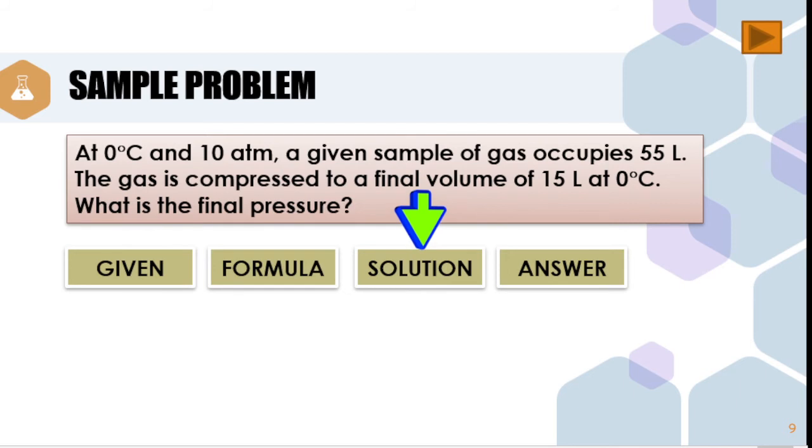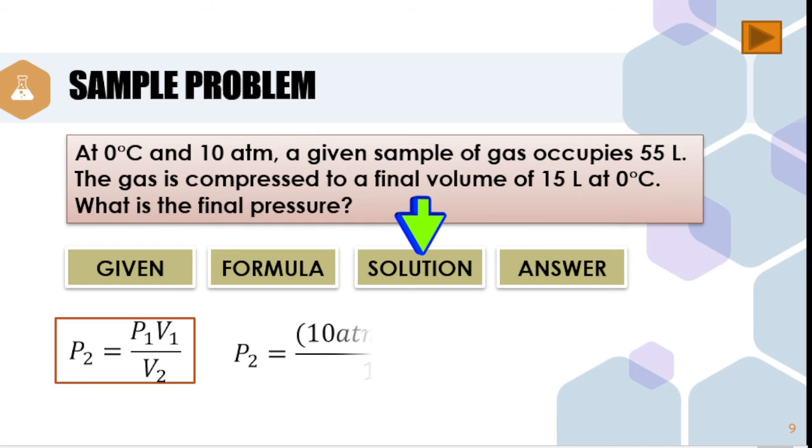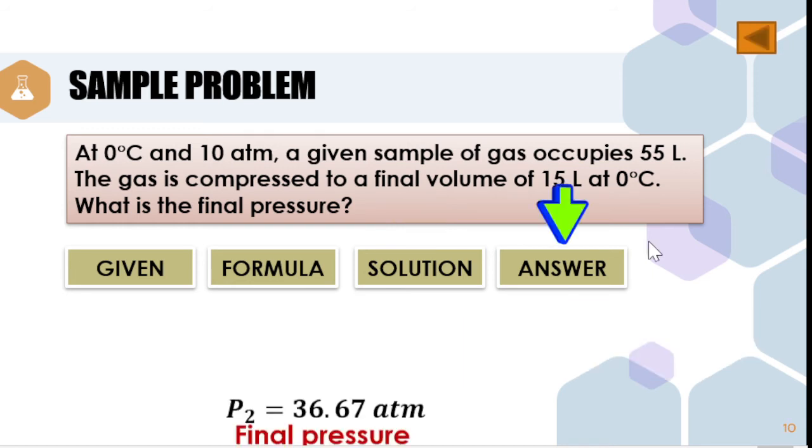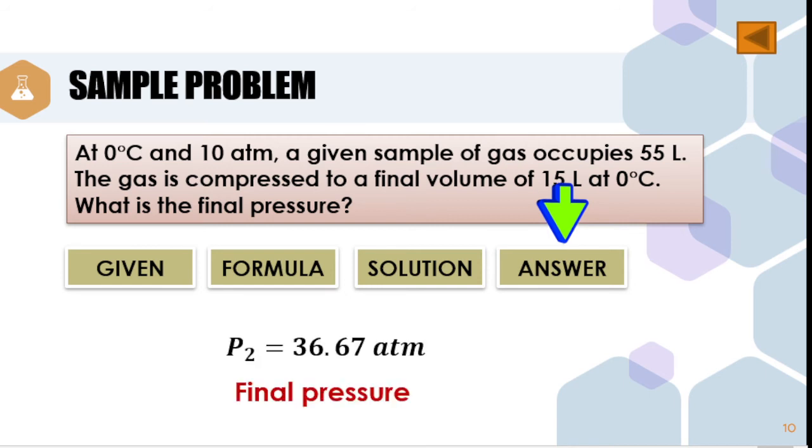Next, let us proceed with the solution. P2 is equal to P1 multiplied by V1 divided by V2. This is our formula. We need to substitute all the given in our formula. Therefore, we have P2 is equal to 10 atm multiplied by 55 liters divided by 15 liters. Based on this particular equation, we can cancel similar units, and that is our liter. Now, we can first solve for the numerator. 10 atmospheres multiplied by 55 is equivalent to 550 atmospheres, and then divide it by 15. We will arrive at the final answer. Our final pressure is equivalent to 36.67 atmospheres.